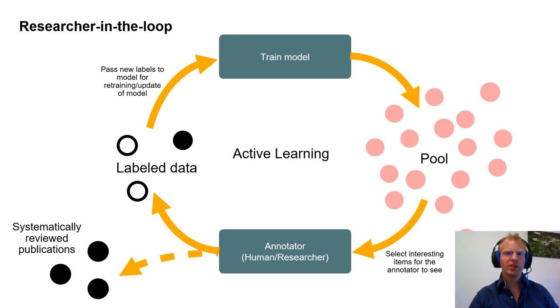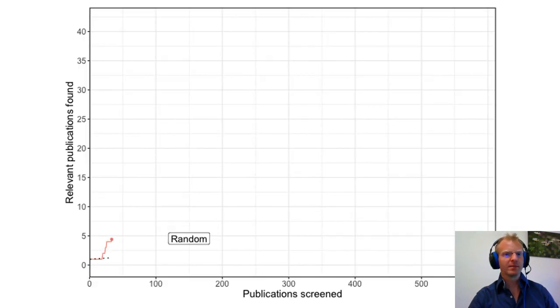We call this process researcher in the loop. Consider the use case of systematic reviewing. For one of my reviews I found 6000 hits, and only 38 appeared to be relevant.